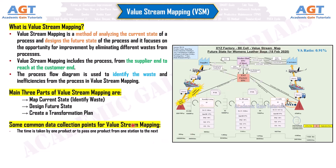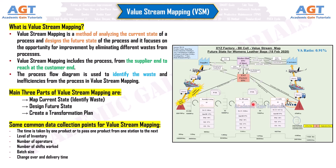Some common data collection points for Value Stream Mapping are: the time taken to pass one product from one station to the next, Level of Inventory, Number of Operators, Number of Shifts Worked, Batch Size, Changeover and Delivery Time, and Productivity.